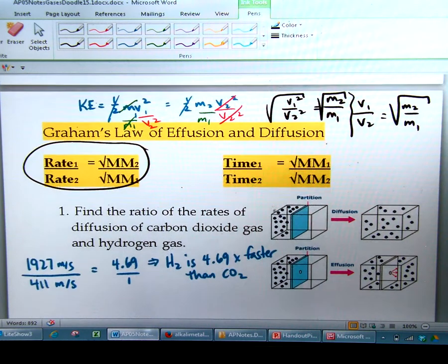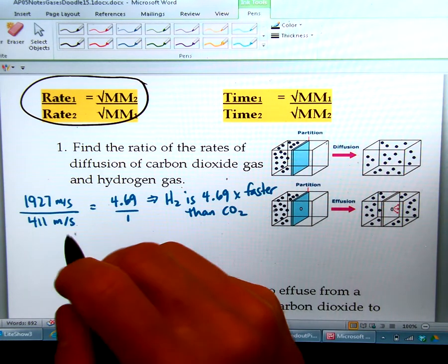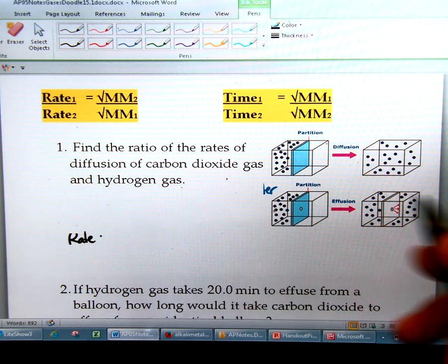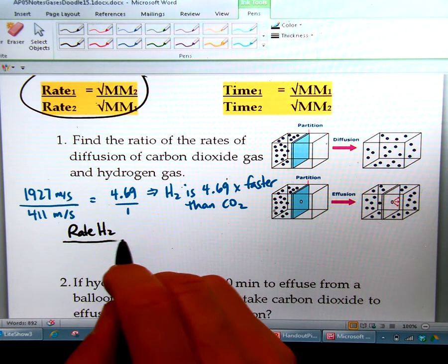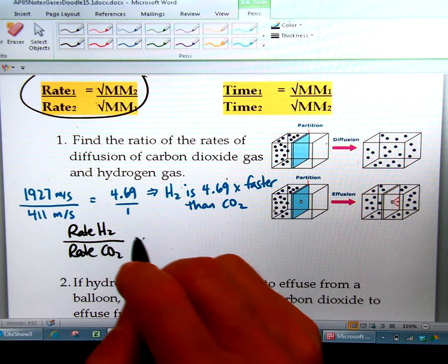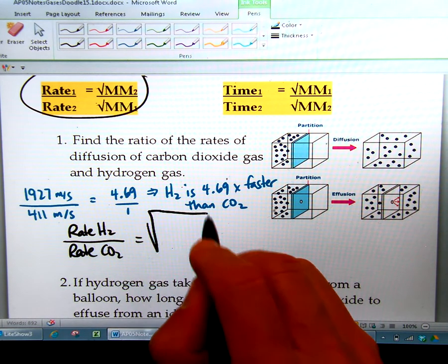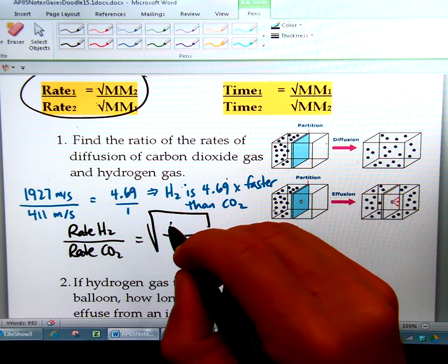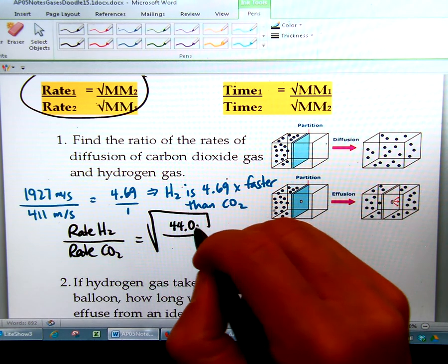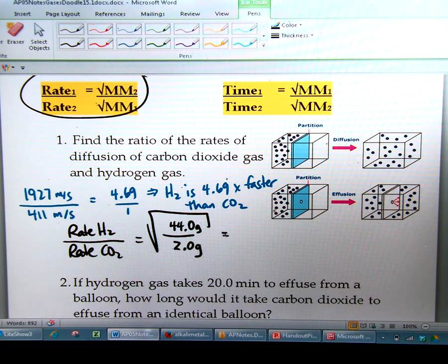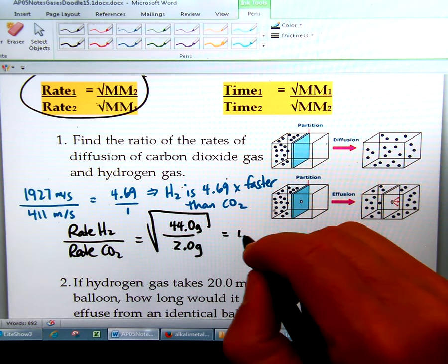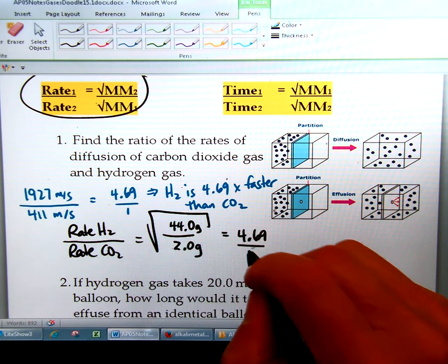So now let's use our new equation to do this quickly and more efficiently. So the rate of hydrogen, I know that one's faster, so I'm going to put that rate up top compared to the rate of carbon dioxide equals the square root of the ratio of their masses. Now carbon dioxide goes up here. I'm just going to use grams because it doesn't matter as long as you match. So we're going to take the square root of 44 over 2, which is like the square root of 22. So the square root of 22 equals 4.69, which makes sense because that's what we found up here.